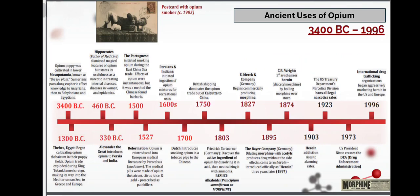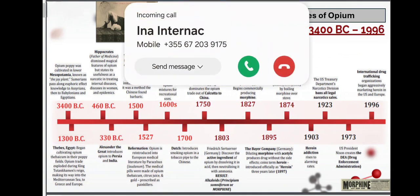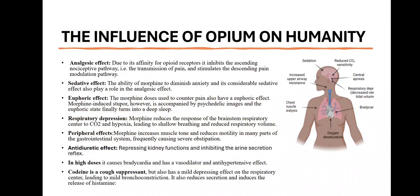Here is a depiction of ancient uses of opium, where opium was used in Egypt and by Alexander the Great. The influence of opium on humanity includes its analgesic effect, sedative effect, euphoric effect, respiratory depression, peripheral effects, and antidiuretic effect. In high doses it can cause bradycardia and has a vasodilatory and antihypertensive effect.